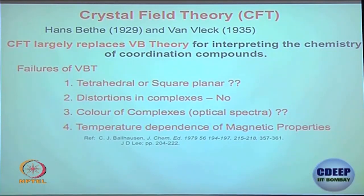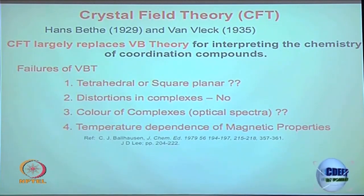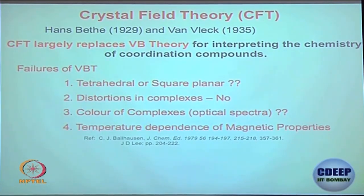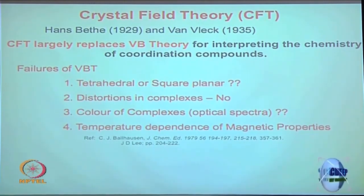When there is any distortion, valence bond theory is discussing an ideal situation — bond elongation and shortening cannot be explained by valence bond theory. In a moment you will see how distortion is handled by crystal field theory. The color of complexes is also something valence bond theory cannot explain.